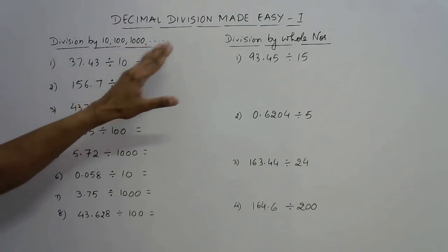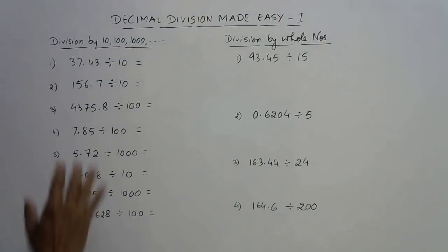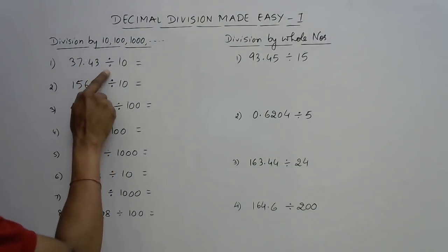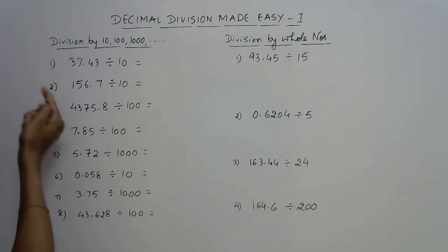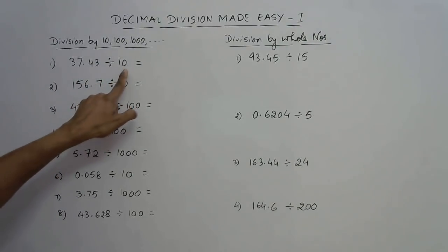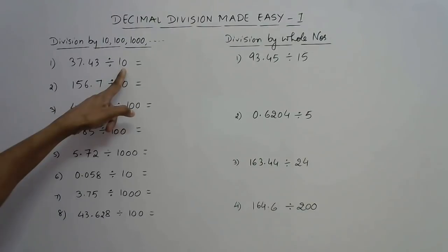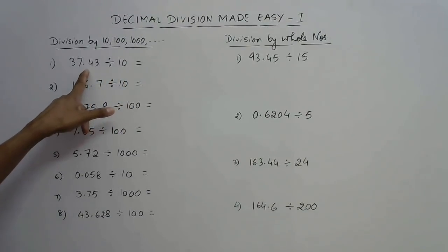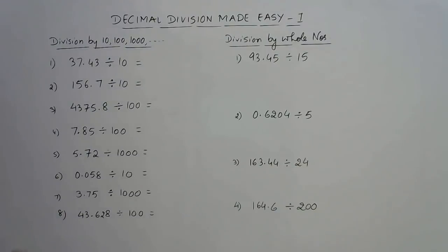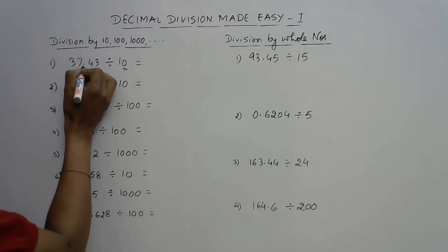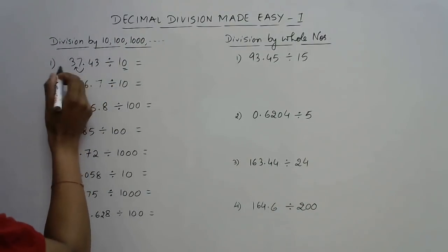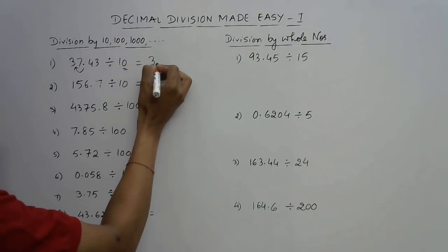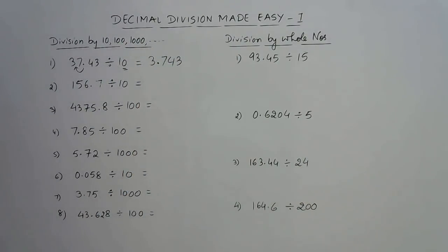To understand division by 10, 100, 1000, and so on, we just need to know that on division by base quantities the decimal moves towards the left. The number of zeros in the base quantity tells us how many places the decimal moves left. So if there is only a single zero, we shift the decimal one place to the left — for example, 37.43 ÷ 10 gives us 3.743.